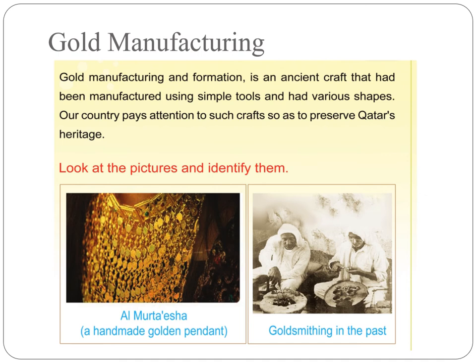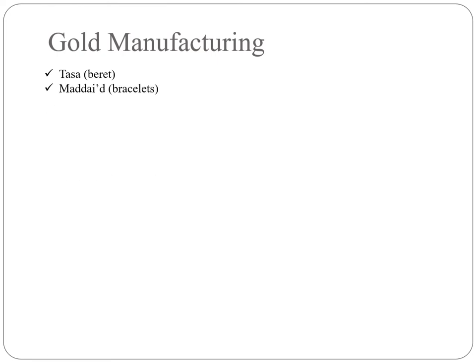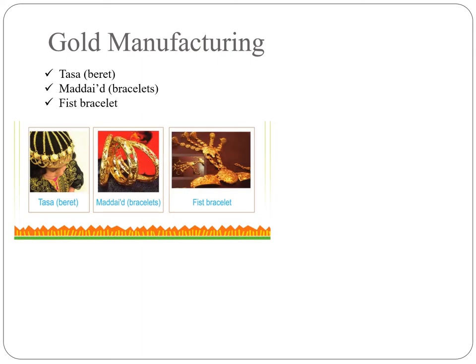This is how goldsmiths used to work in the past. I will now show you some more jewelry. The first one is Tasa — it's a baret. The second one is Mada-e-sha. And the third one is a fist bracelet. Have a look at these images: the first one is Tasa, then you see bangle-like things called Mada-e-sha.